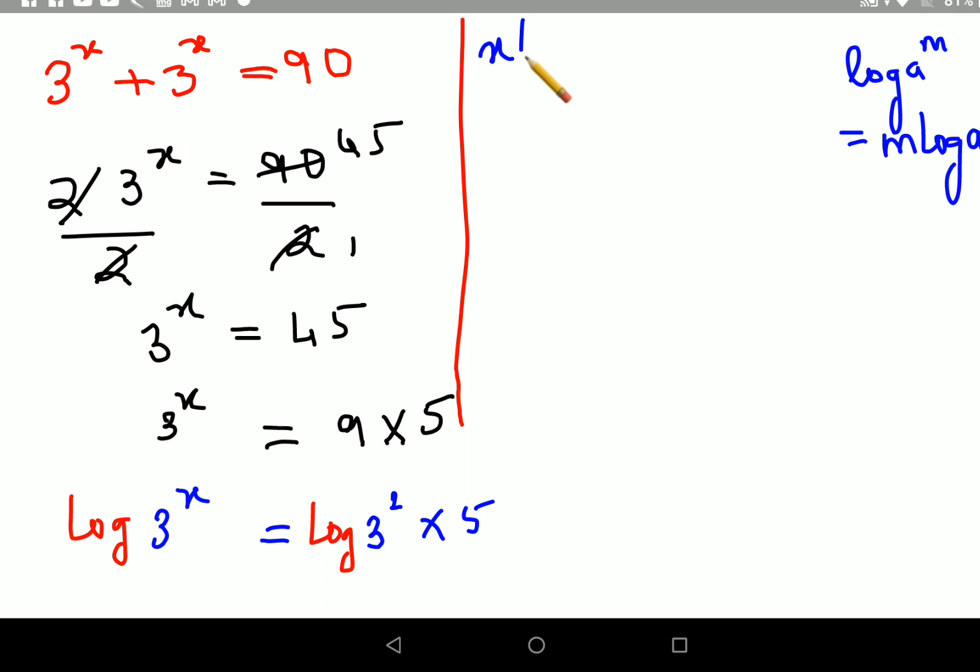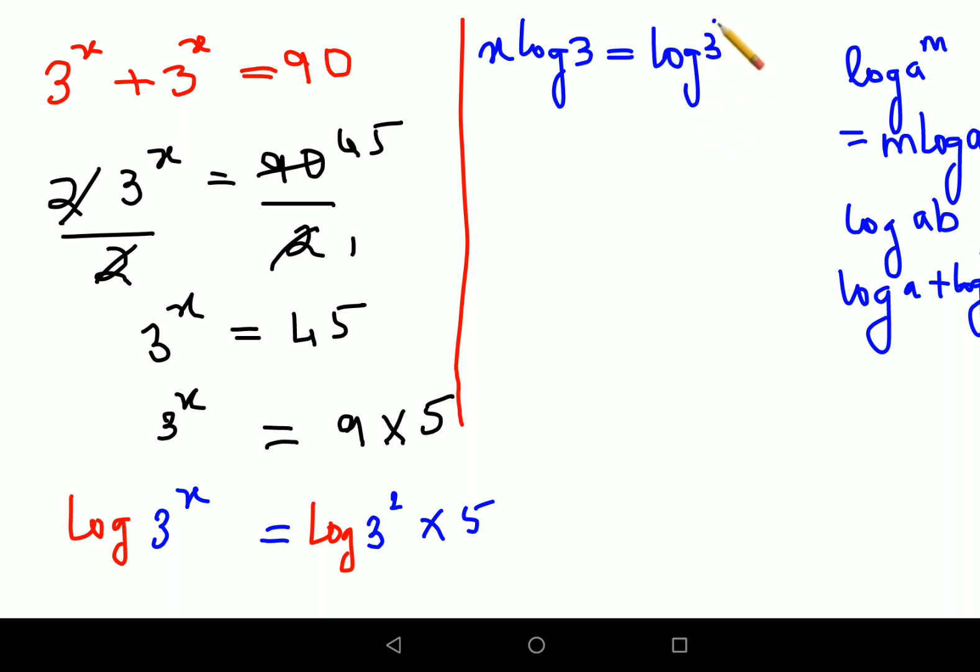So here you will get x log 3. Next, on the RHS you have a product. Log of a × b is nothing but log a + log b. So this can be written as log of 3^2 + log 5.